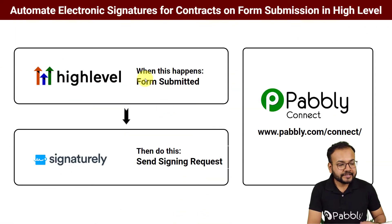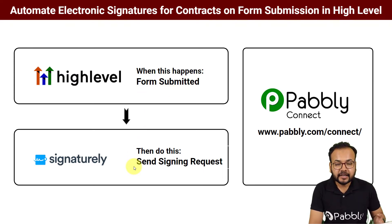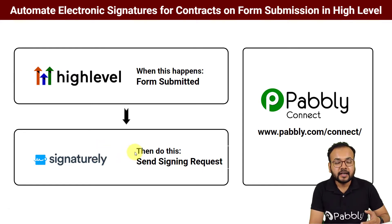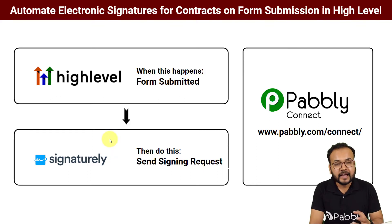This will be the flow of the automation. Here we are using High Level application, a marketing CRM, where we have created a service request form. When the form is submitted, a signing request or contract will be automatically generated and delivered to that customer via Signaturely. Signaturely is a cloud-based e-signature solution provider by which you can collect approvals and electronic signatures on any legal documents. This happens automatically, so you do not have to manually create contracts and e-signature approvals, saving you a lot of time and improving your productivity.